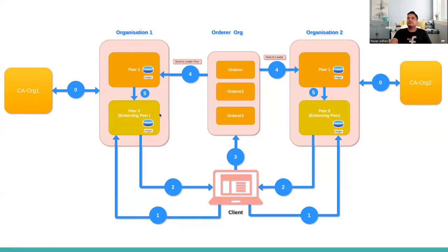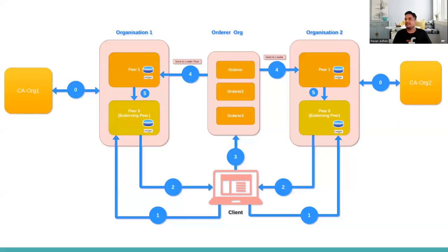The endorsement is sent back to the client. The client validates that it has sufficient endorsements — requiring two as per the endorsement policy — then creates a signed transaction response and sends it to the orderer. The orderer's responsibility is to chronologically order these transactions and create a block based on batch time or batch size configuration. The orderer signs the block and sends it to the leader peer of each organization.